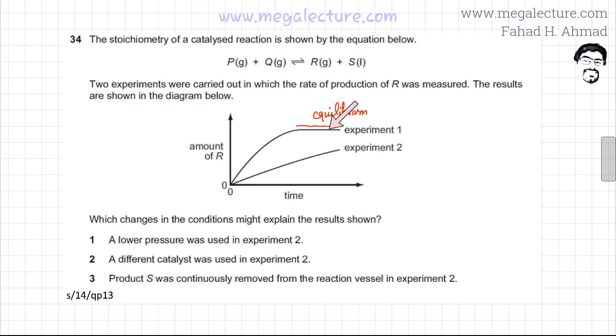So in experiment one, equilibrium is reached. And then you have another experiment where the amount of R with respect to time is being produced at a slower rate. So this reaction is slower. The curve is less steep.